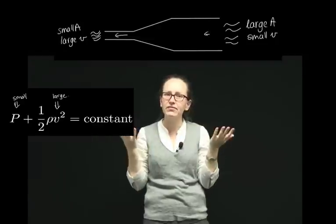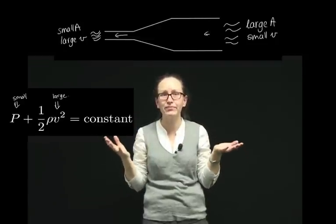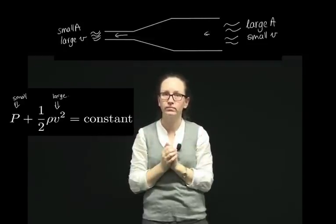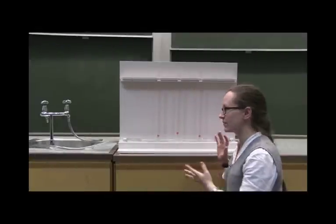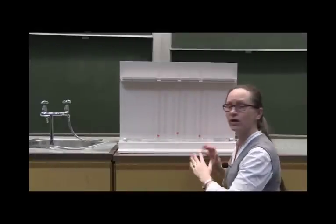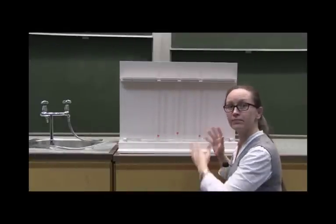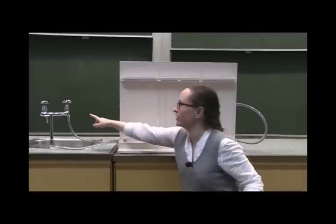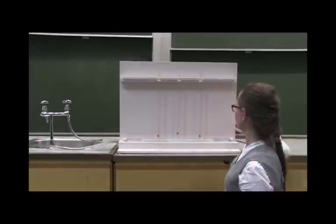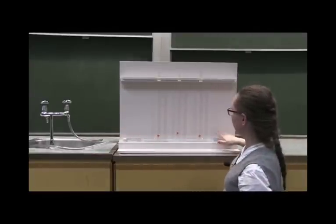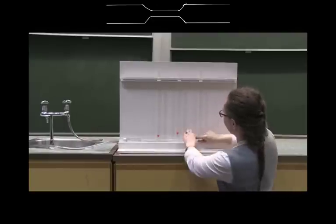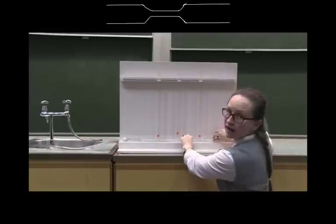What we have here is a demonstration showing Bernoulli's principle. In a minute, we'll turn on the tap here, which will cause water to flow in from this end. Here we have the wide pipe, so the wide pipe has the large cross-sectional area, and so the smaller velocity flowing through.